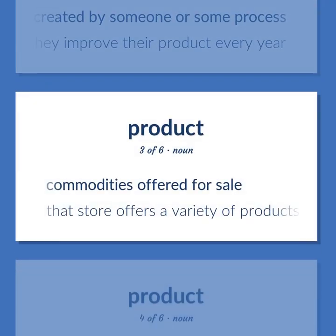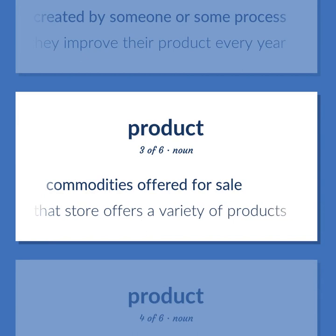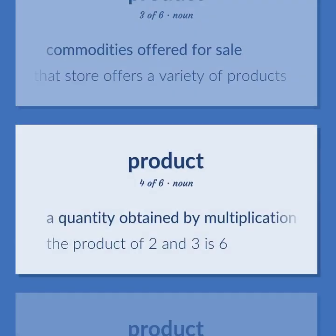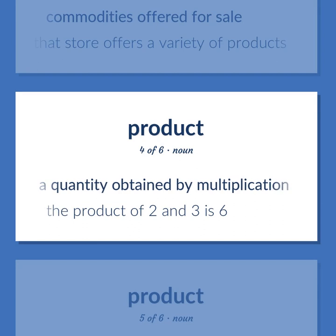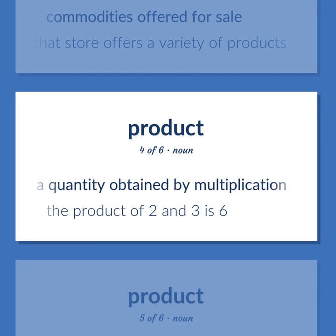Product (noun): Commodities offered for sale. Example: That store offers a variety of products. A quantity obtained by multiplication. Example: The product of two and three is six.